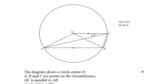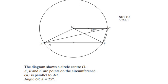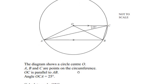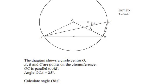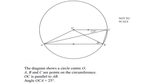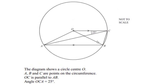Hello and welcome to my channel. In this video we are going to solve an example on circle theorems. The diagram shows a circle with center O. A, B, C are points on the circumference of the circle, OC is parallel to the line AB, and angle OCA is given as 25 degrees. We are asked to calculate the angle OBC.